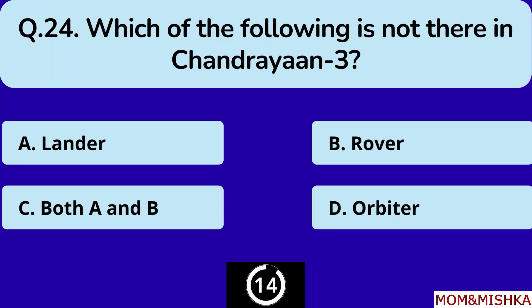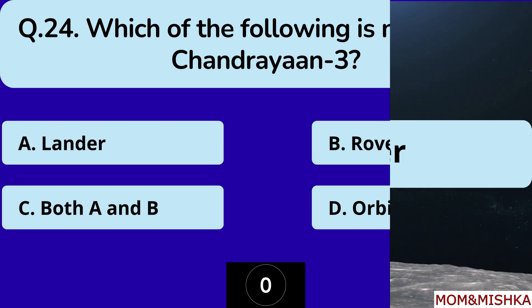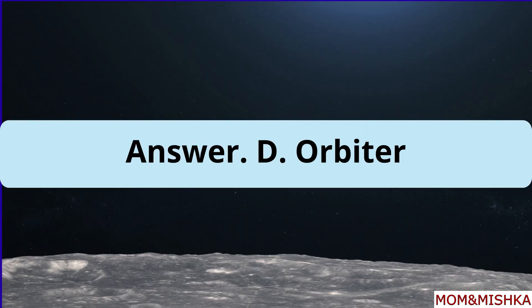Which of the following is not there in Chandrayaan-3? Orbiter is not there, option D.